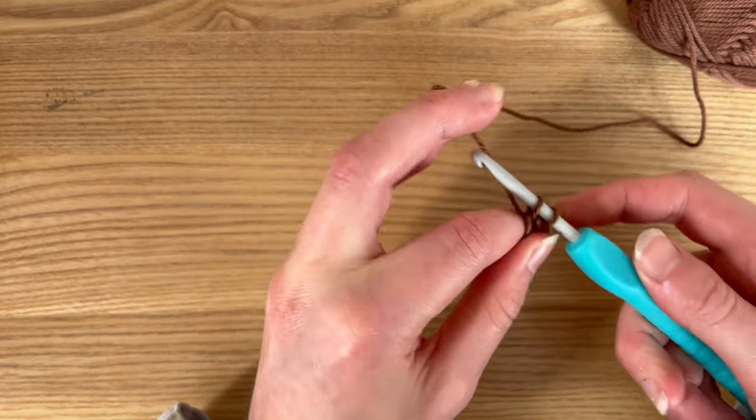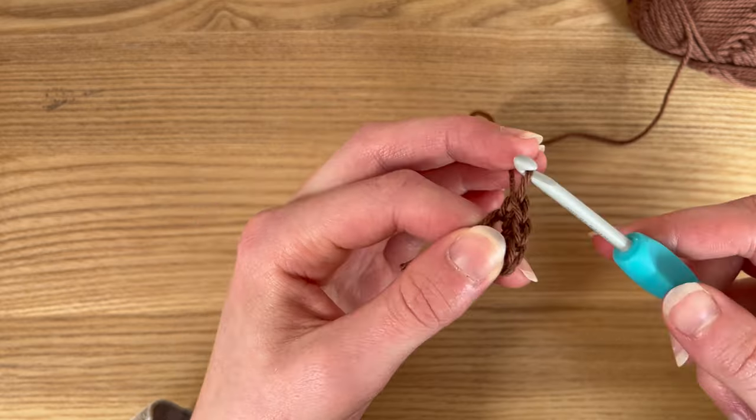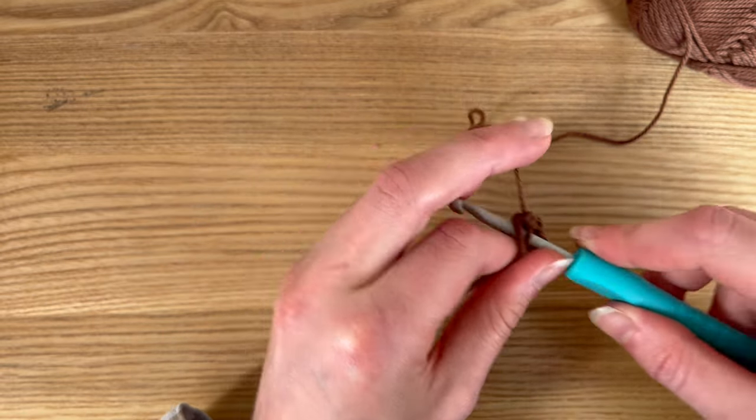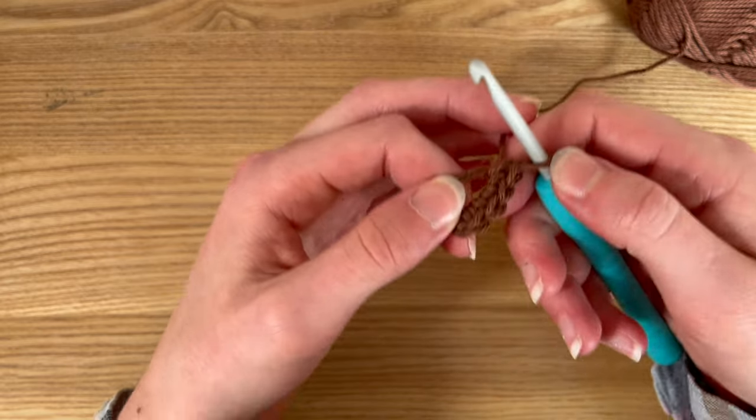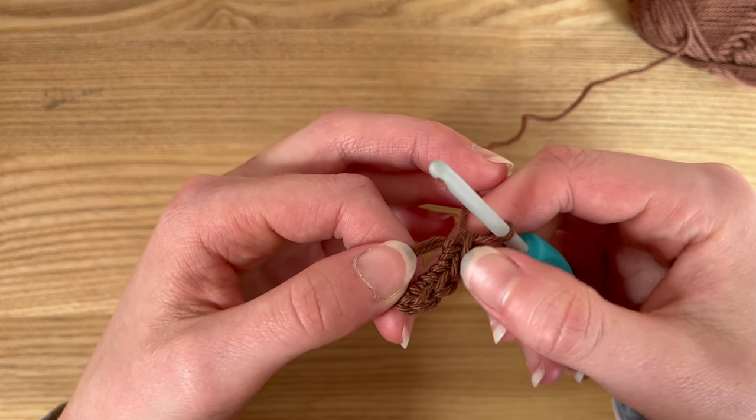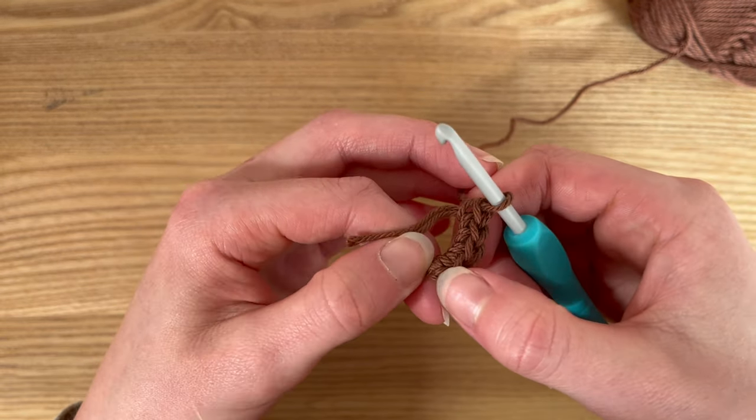Again, yarn over, pull through, yarn over, pull through two. One more time, through the hole, yarn over, pull through, yarn over, pull through two. See now we've got five. One, two, three, four, five.